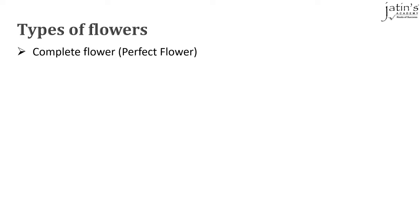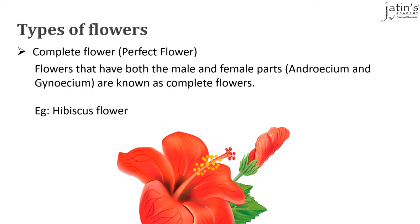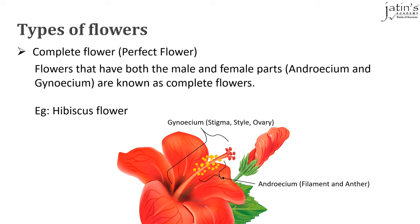Different types of flowers exist which contain the male and female parts. However, certain flowers do not contain both. A complete or perfect flower has both the male and female parts — that is the androecium and the gynoecium. For example, a hibiscus flower, where we can see the gynoecium — the stigma, style and ovary — as well as the androecium — the filament and anther — together in the same flower. Such a flower is called a complete flower.